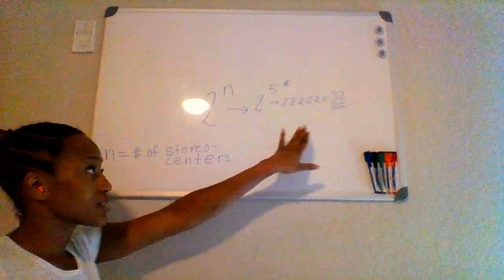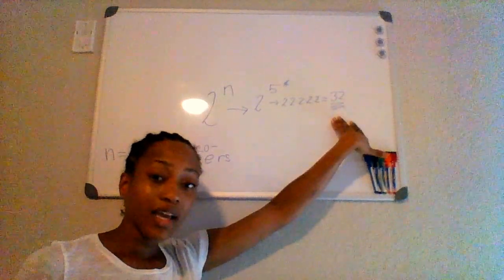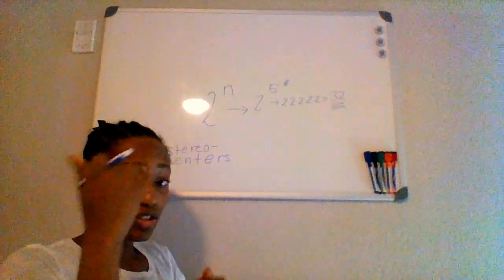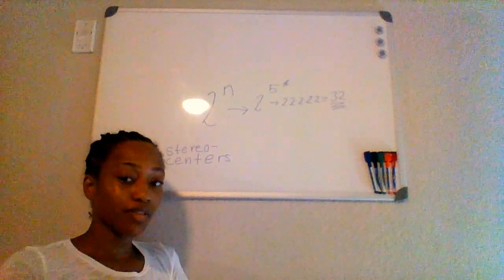So 32 different stereoisomers are possible, and when I say stereoisomers again, I mean enantiomers, diastereomers, or cis-trans isomers if you have a double bond involved. All right.